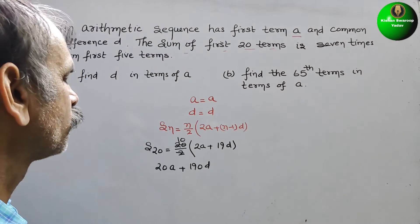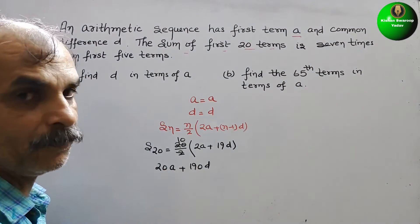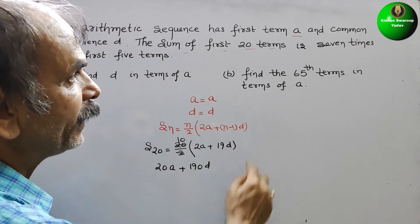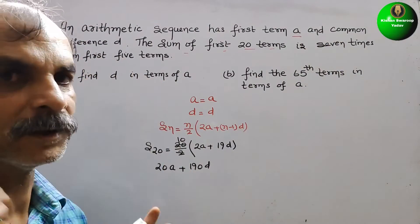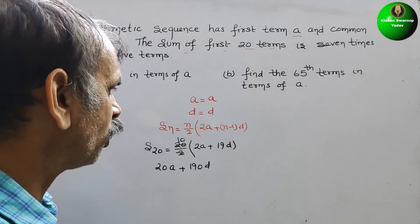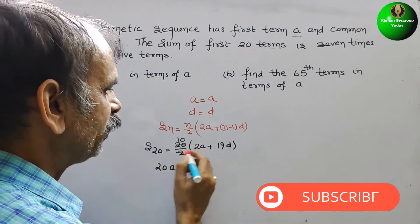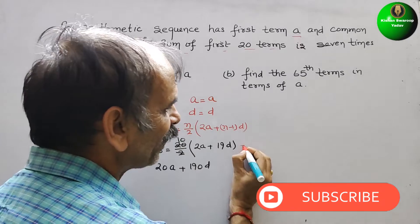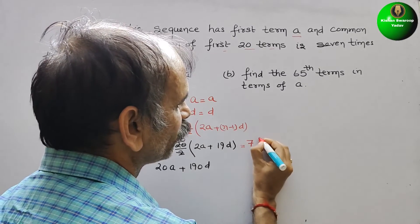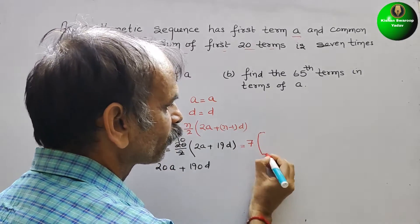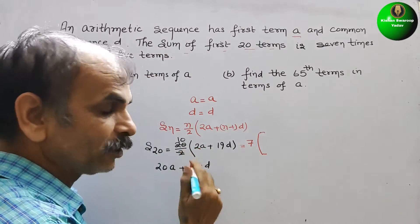Now, so this is one thing. Next they have told is 7 times the sum of 5 terms. That means this is equal to 7 times the sum of 5 terms.